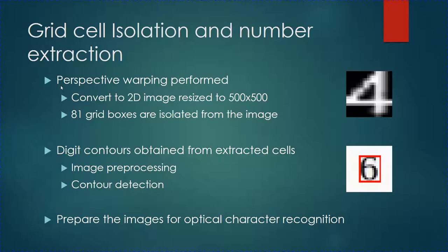In the next step, perspective warping is performed on the predicted contoured rectangle image to convert it into a 2D image. The warped image is then subjected to additional preprocessing to remove unnecessary noise and is resized to a standard 500×500 image. Each individual grid box is then isolated from the puzzle by predictably cropping based on the cell size, splitting the Sudoku box into 81 different grids. The objective is to prepare all individual grids for applying the optical character recognition process.